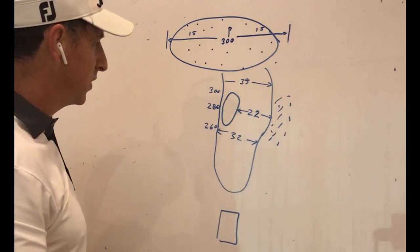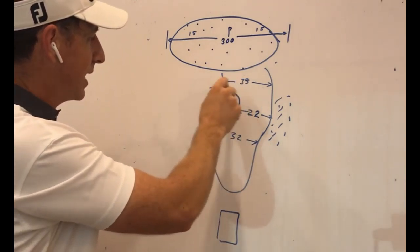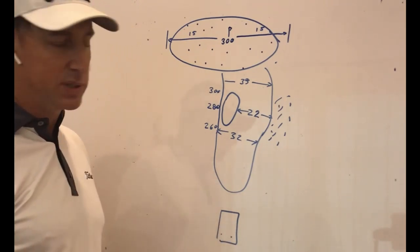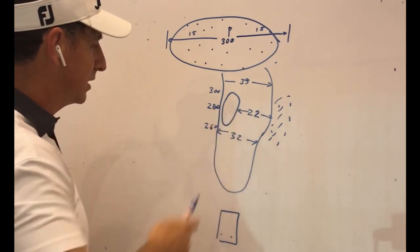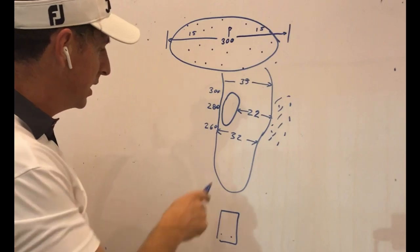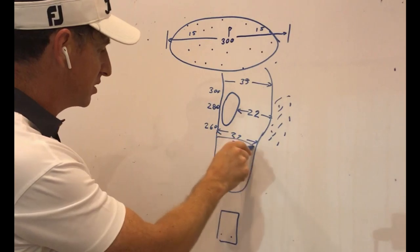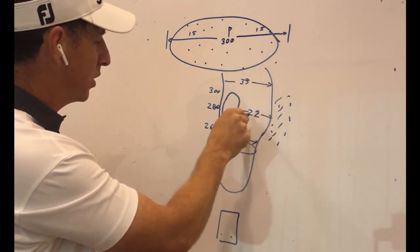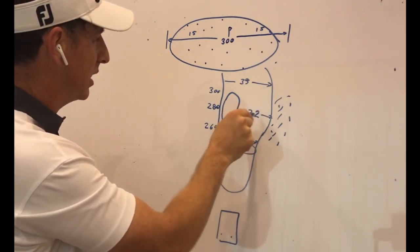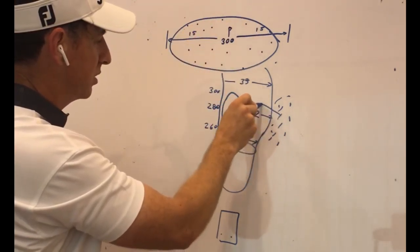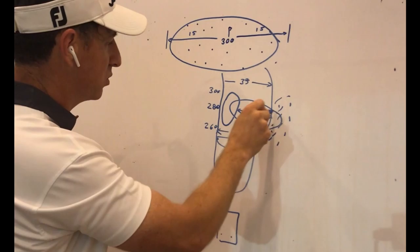We need to figure out can we cross the bunkers. Maybe the tees are back on a particular day and it's just not a smart play. In that case we'd be laying back to say where our three wood range would be, because it gives us a wider dispersion.